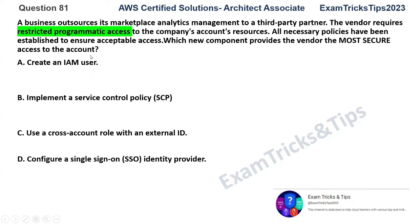Let's understand what the problem is here. We have a business outsourcing its marketplace analytics management to a third-party partner, so we have three entities: AWS, the business, and the third-party partner. The vendor requires restricted access to the company's account resources. All necessary policies are established, and we want to know which option they should choose out of the four given options.